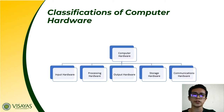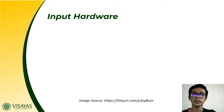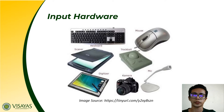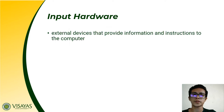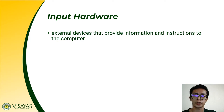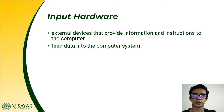Please take note that we have five classifications of computer hardware according to its use. Let us start with input hardware. When we say input hardware, we refer to the different external devices that provide information and instructions to the computer system — meaning data moves from the outside world into the inside of the computer. This hardware feeds data into the computer system.